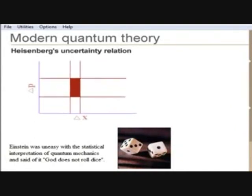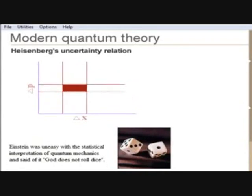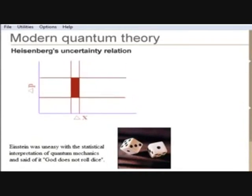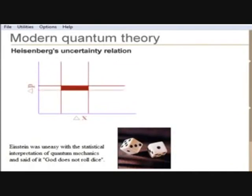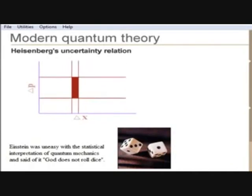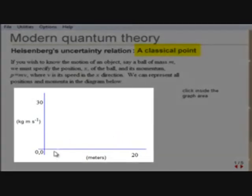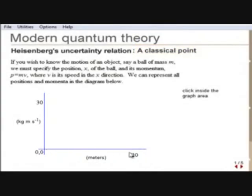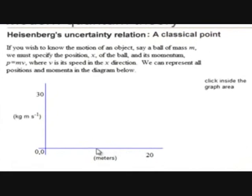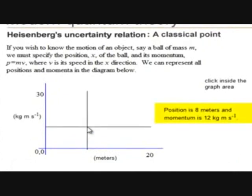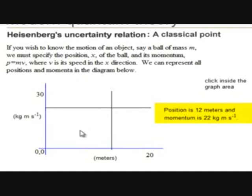The essential difference between classical and quantum mechanics is expressed concisely in the Heisenberg uncertainty relationship. A classical point can have its momentum and position represented by a point in position-momentum space. This space is called phase space. Click inside the graph. The coordinates give position and momentum simultaneously for a classical particle.